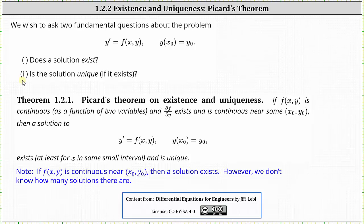To help us answer these questions, we can use Picard's theorem on existence and uniqueness, which states: if f of x comma y, given by y prime, is continuous as a function of two variables, and the partial of f with respect to y exists and is continuous near the point x sub zero comma y sub zero given by the initial condition, then a solution to the initial value problem exists at least for x in some small interval and is unique.